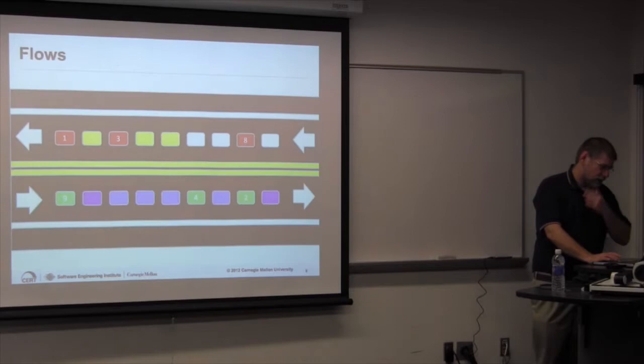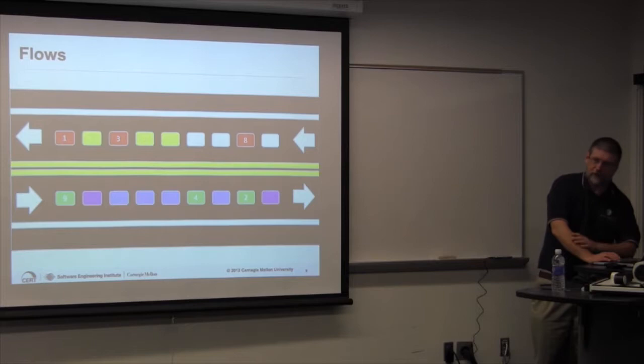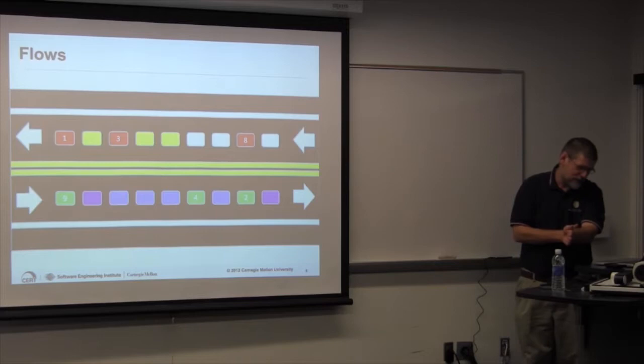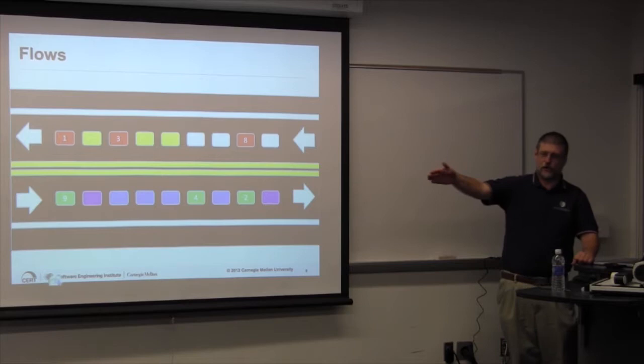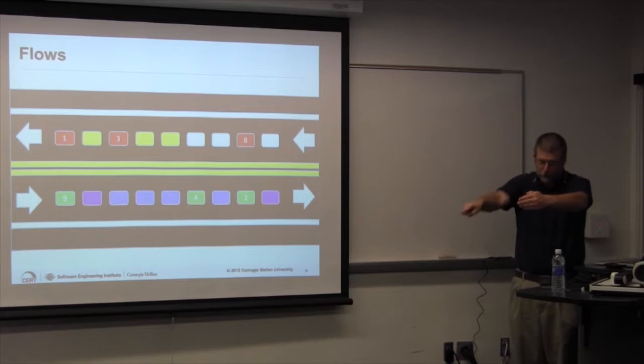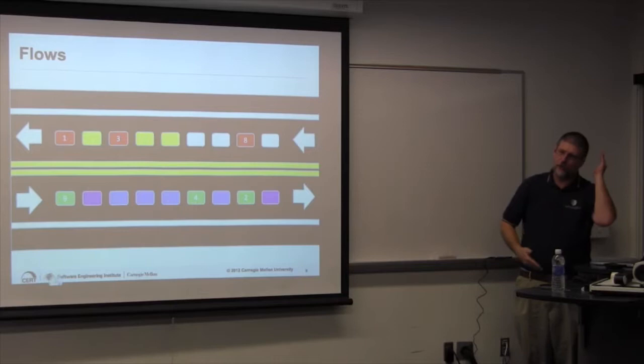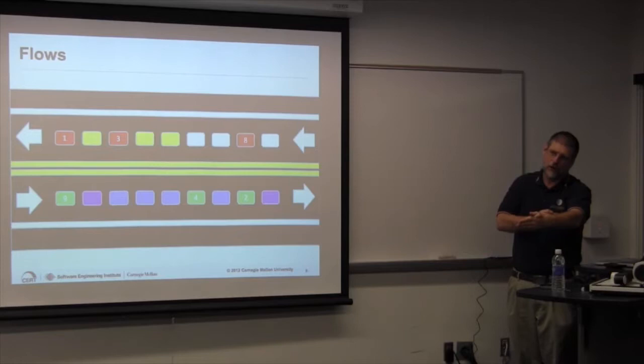Another important thing to understand about flows — particularly Cisco v5 and silk — is they are unidirectional. Argus and Bro put things back together, so a connection has data going both ways as one record. In silk, an SSH connection gives you two flows: high port to port 22 outbound, and port 22 back to your high port inbound. Putting those back together — for example, knowing the ratio of bytes out to bytes in — is not one of the easier things to do in silk.